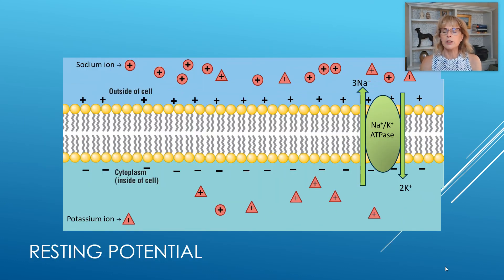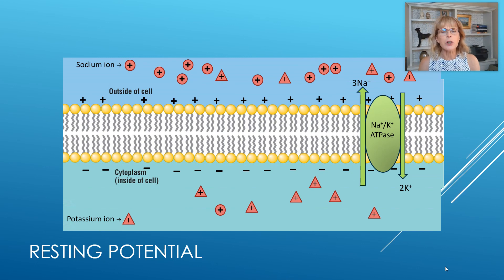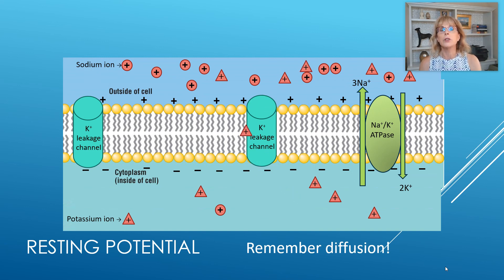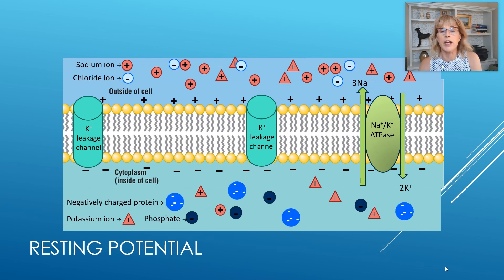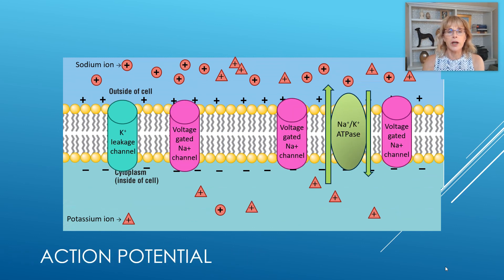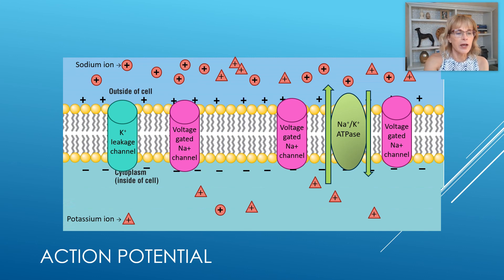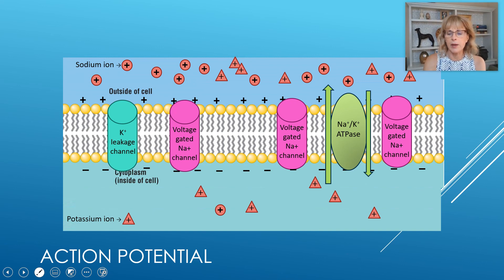One more time: the sodium-potassium pump pumps three sodiums out every time it uses an ATP, and simultaneously pumps two potassiums in — already creating more positives on the outside. Then the potassium leakage channel allows none of the sodiums to come in but allows some potassiums to leave, so now we really have a lot of positive charge on the outside and less positive charge on the inside. This is our electrochemical gradient — lots of ions on the outside that want to get in.